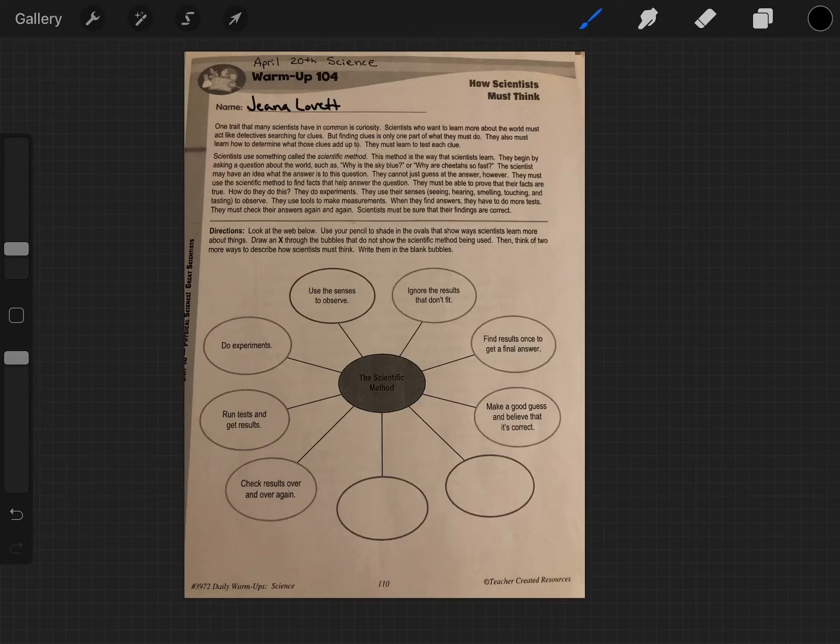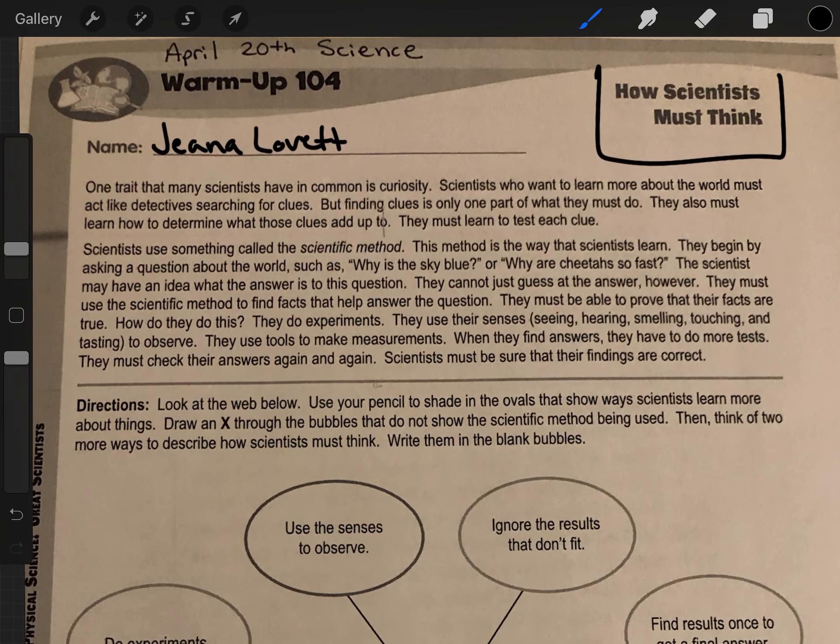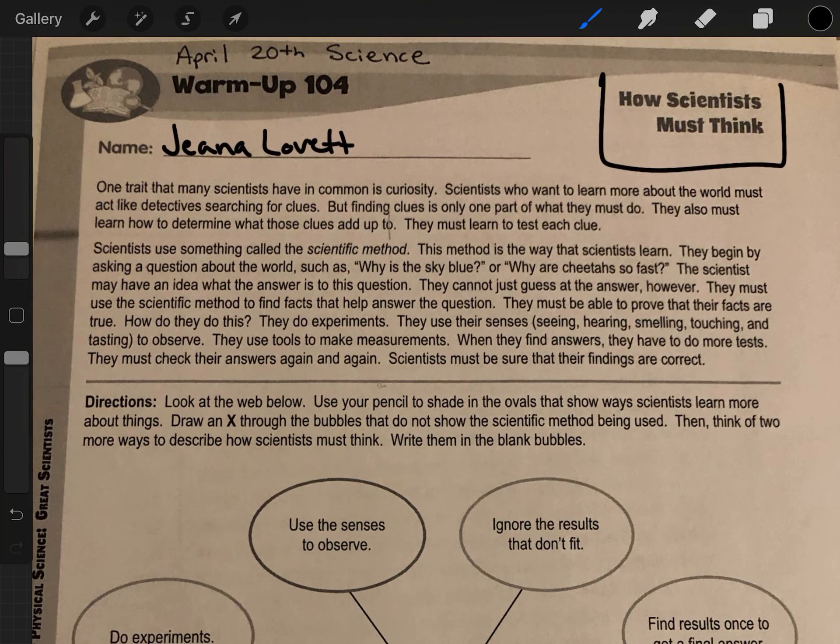Hello! We are going to go over April 20th AMI work for science. This is a worksheet titled How Scientists Must Think. We have a passage at the beginning.